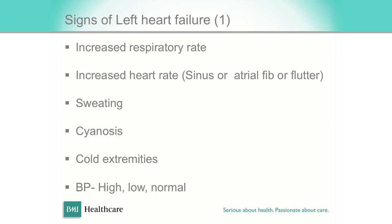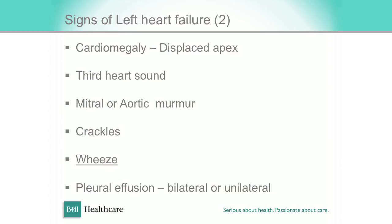What are the signs of left heart failure? They are common in acute heart failure but you do see them in chronic heart failure like our patient. Signs include increased respiratory rate, increased heart rate, sweating, cyanosis, cold extremities. The blood pressure can be high, normal, or low — if it is low, you have to worry. Further signs are displaced apex, additional heart sounds, murmurs, crackles. Please don't ignore the crackles, and never ignore the wheeze because that may be the only sign of left heart failure.